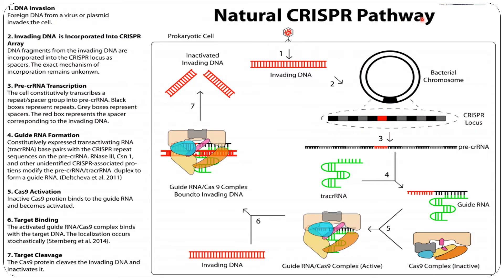Let us look at the natural CRISPR pathway. Since it is a protective mechanism of the bacterial cell, whenever a virus or bacteriophage attacks the bacteria, the virus first injects its DNA inside the bacterial cell. The first step is DNA invasion. The second step is incorporation of this invaded DNA into the CRISPR array, with palindromic sequences interspersed with the bacteriophage DNA.